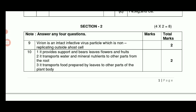Using paper solution: the stem provides support and peers for leaves, flowers and fruits. It transports water and minerals, nutrients to other parts from the root. It transports the food prepared by leaves to other parts of the plant body.